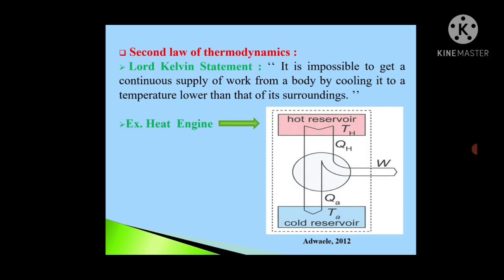Suppose an engine is working between source and sink. The source must be at higher temperature than that of sink. Then only the work done is possible. We will see example here, heat engine.